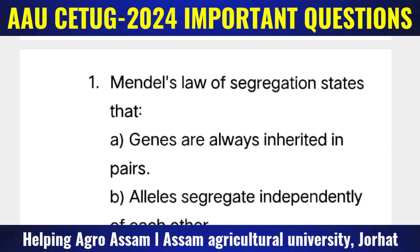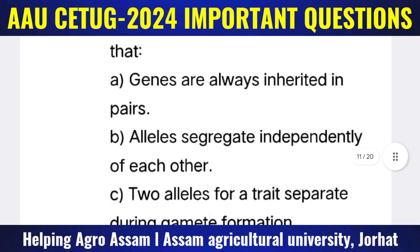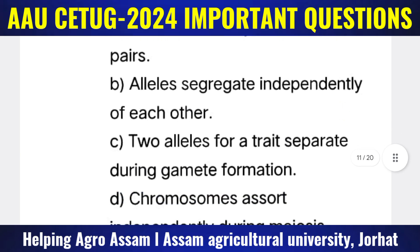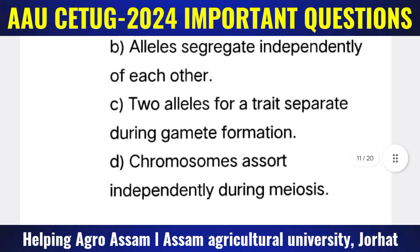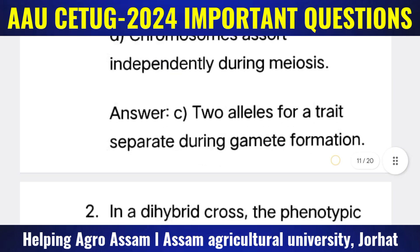Now, Principles of Inheritance and Variation. Question 1: Mendel's law of segregation states that — Options: (A) Genes are always inherited in pairs, (B) Alleles segregate independently of each other, (C) Two alleles for a trait separate during gamete formation, (D) Chromosomes assort independently during meiosis. The correct answer is option C.